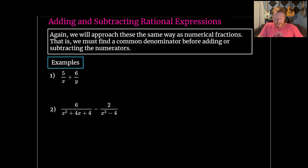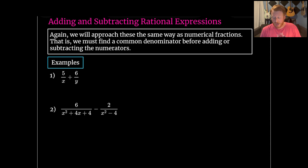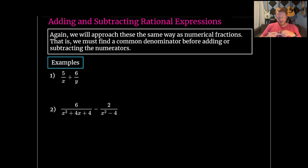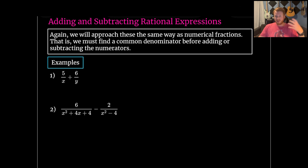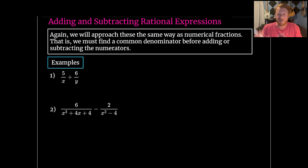Things get a little more interesting when we start adding and subtracting rational expressions. We're going to approach these the same way as numerical fractions — we need to find a common denominator before adding or subtracting the numerators. Think of it like pizza: if one pizza is cut into 10 slices and another into 8, you need to make everything the same size piece before you can count them up.